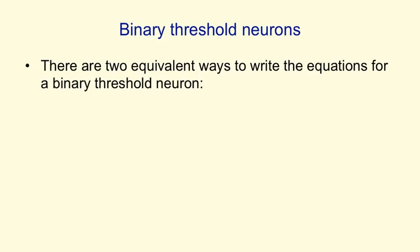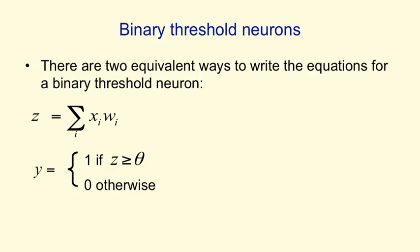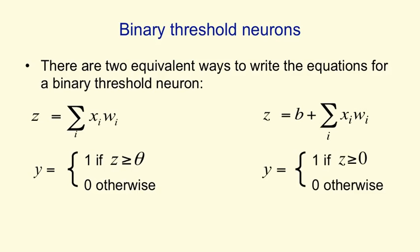There are actually two equivalent ways to write the equations for a binary threshold neuron. We can say that the total input z is just the activities on the input lines times the weights, and then the output y is 1 if that z is above the threshold, and 0 otherwise. Alternatively, we could say that the total input includes a bias term, so the total input is what comes in on the input lines times the weights, plus this bias term, and then we can say that the output is 1 if that total input is above 0, and is 0 otherwise. And the equivalence is simply that the threshold in the first formulation is equal to the negative of the bias in the second formulation.